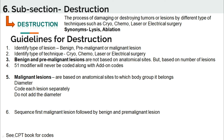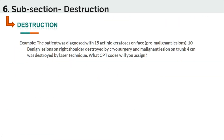The final guideline: sequence the malignant lesion first, followed by benign or pre-malignant lesions. For example, a patient was diagnosed with 15 actinic keratosis on the face (pre-malignant), 10 benign lesions on the right shoulder destroyed by cryosurgery, and a malignant lesion on the trunk with a 4-centimeter diameter destroyed by laser technique.